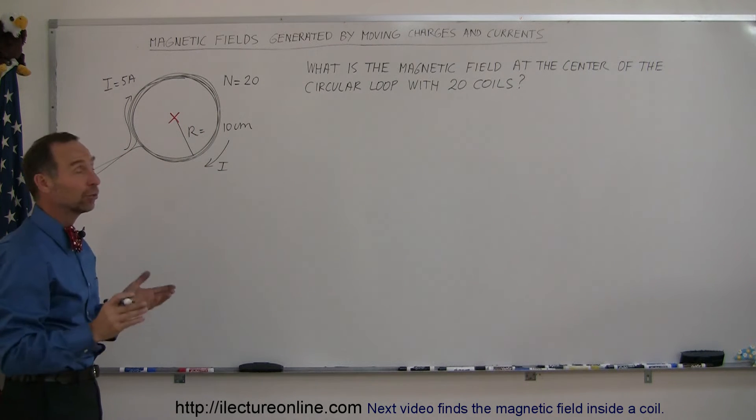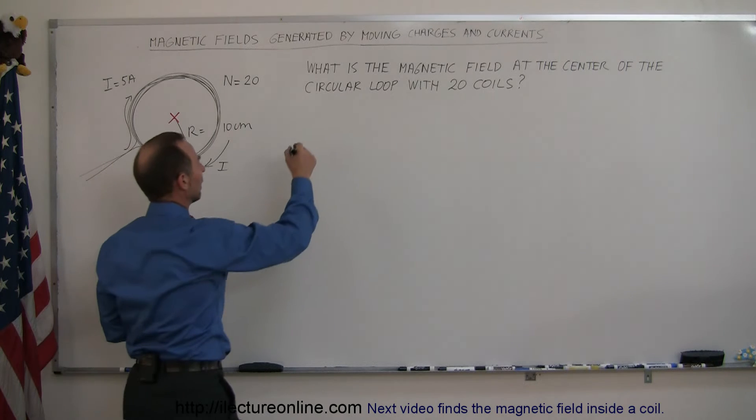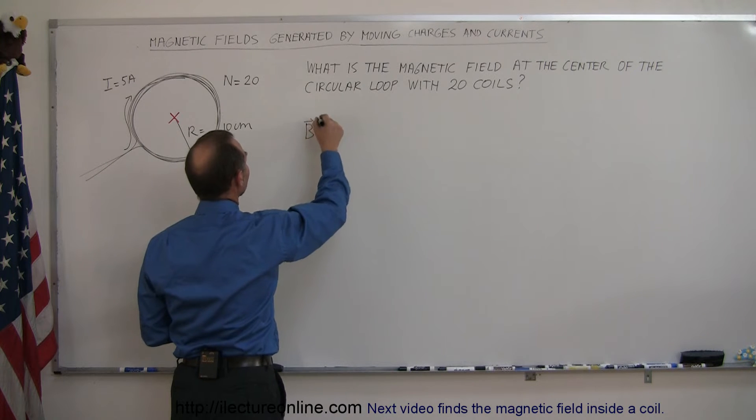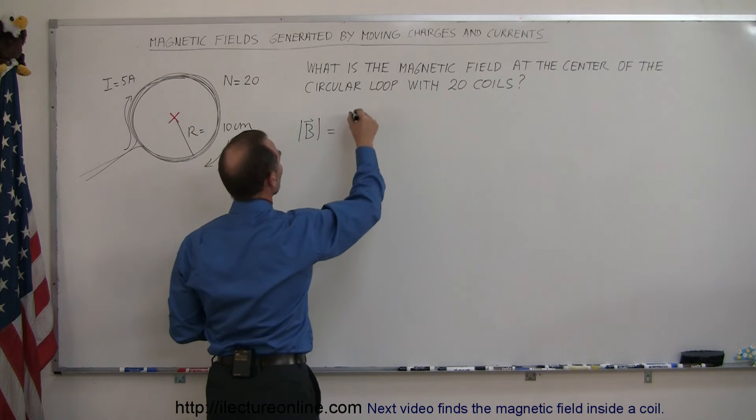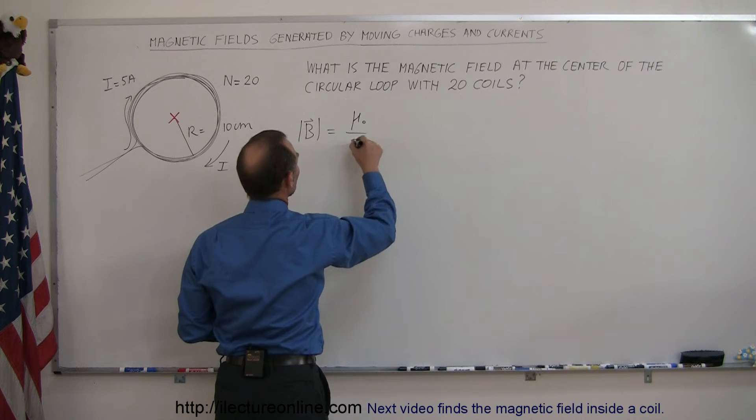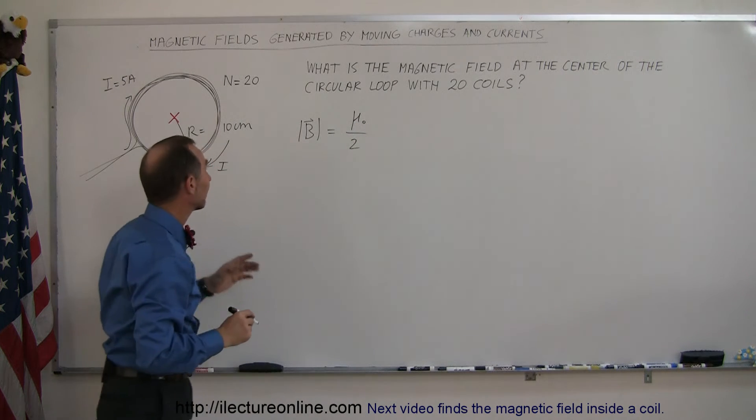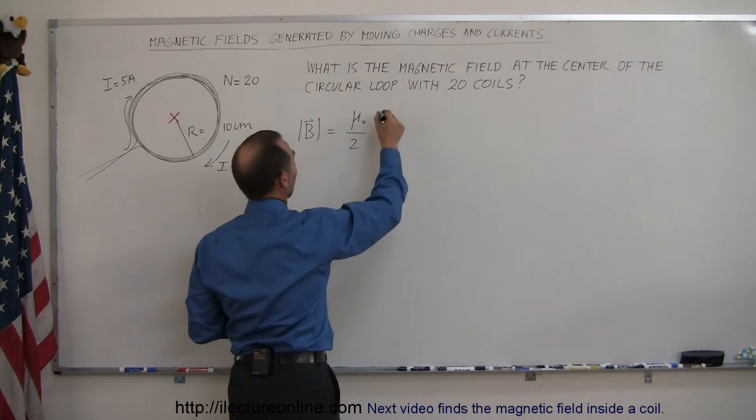All right now for the magnitude of that. The magnitude of the magnetic field at the center of the loop is equal to mu sub nought divided by 2, then multiply times the strength of the current, i,